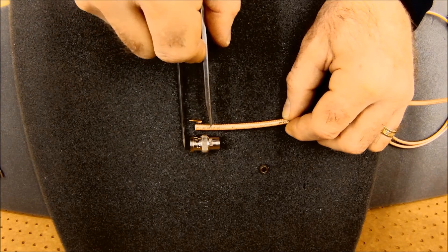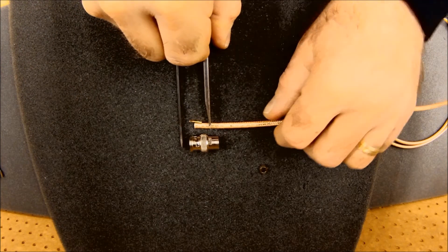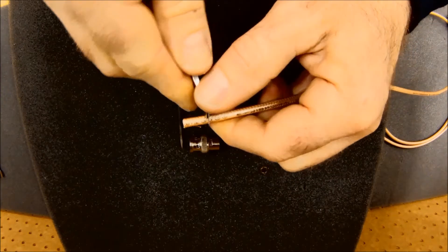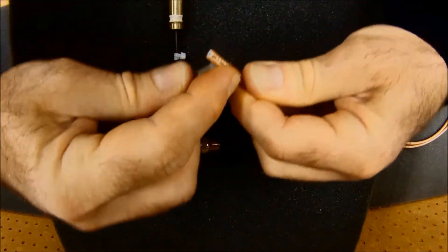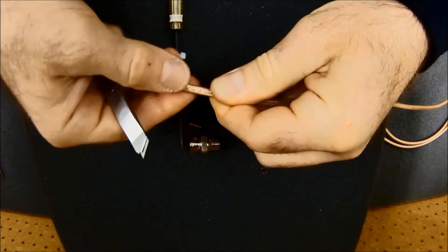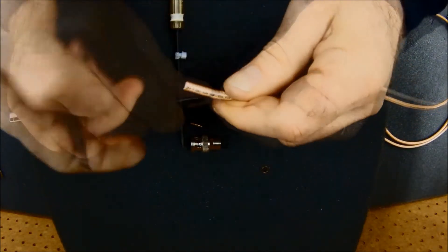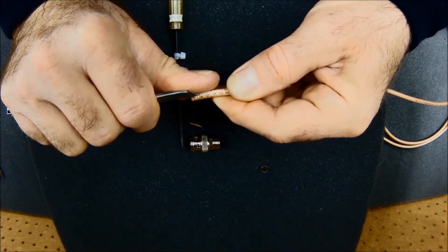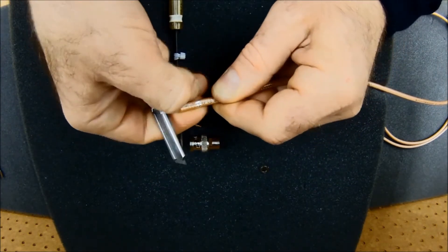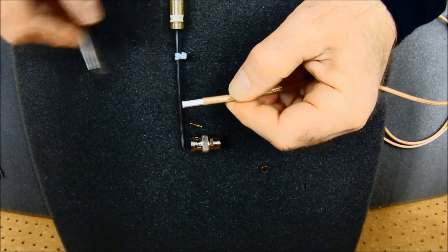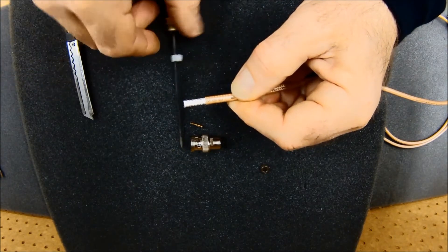So I'm going to start with stripping for the braid. I need to come back about this far. I'm going to take my sharp knife, and I'm going to carefully trim all the way around just to break it loose. A little slice down the side makes it easier to pull it off. That reveals my braided shield here.